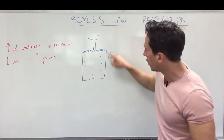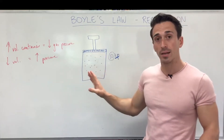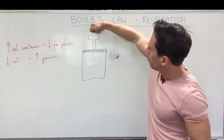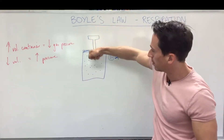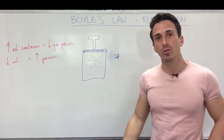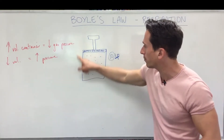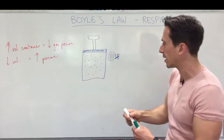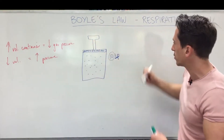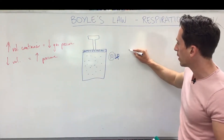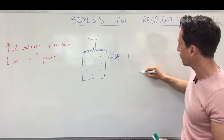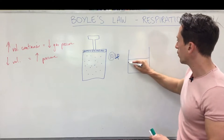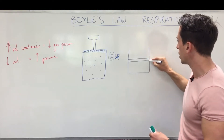Don't worry too much about the units, but remember it's 10 kilopascals. There's a particular volume to this container. Now let's say that we were to push down on this syringe — remember this is a closed container, that's very important. What would happen if we push down on the plunger?